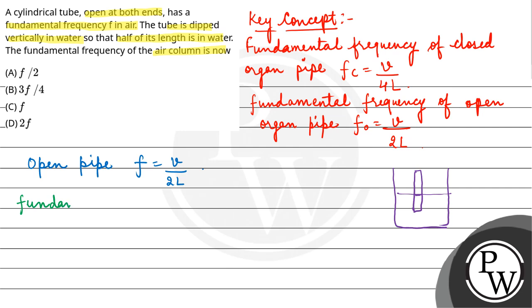The fundamental frequency of the air column will be calculated using the closed organ pipe formula. This is V/(4L'), where L' is half of the original length.